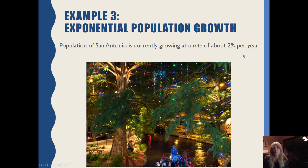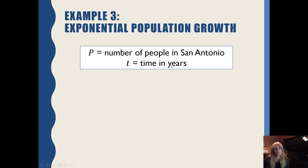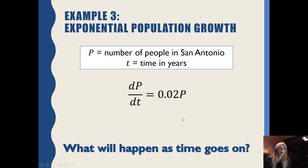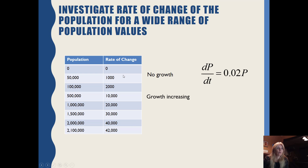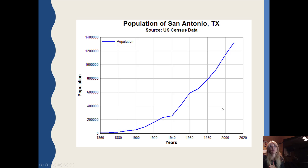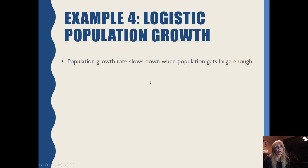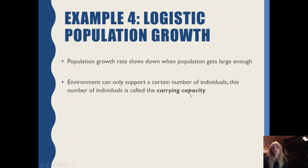The population of San Antonio is growing at about 2% per year. If I let p be the number of people in San Antonio at a particular time, then my change in population over change in time is just 2% of the population at a particular time. As time goes on, the rate of change gets faster and faster as the population increases, but then it starts to slow down because it reaches that carrying capacity. So you see typical exponential growth that transitions to logistic growth — the population growth rate slows down when the population gets large enough.